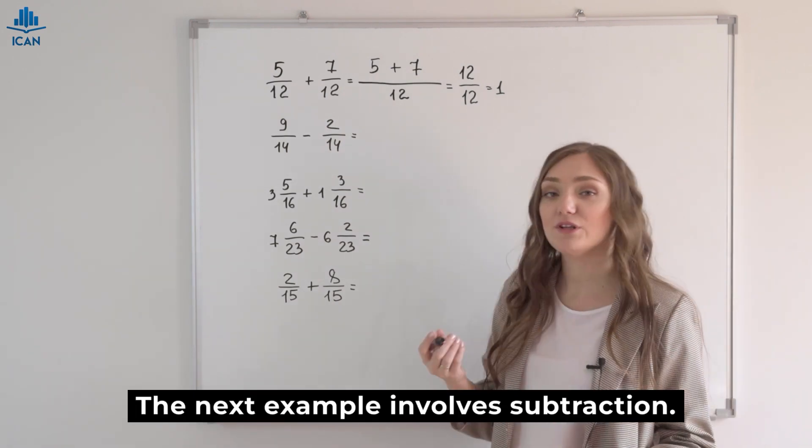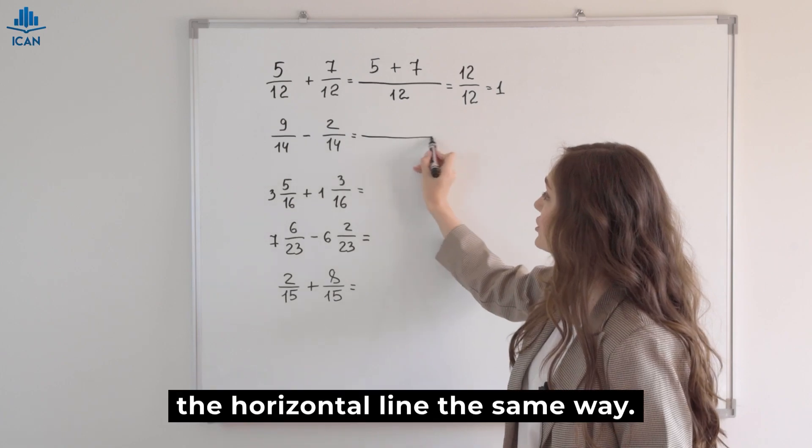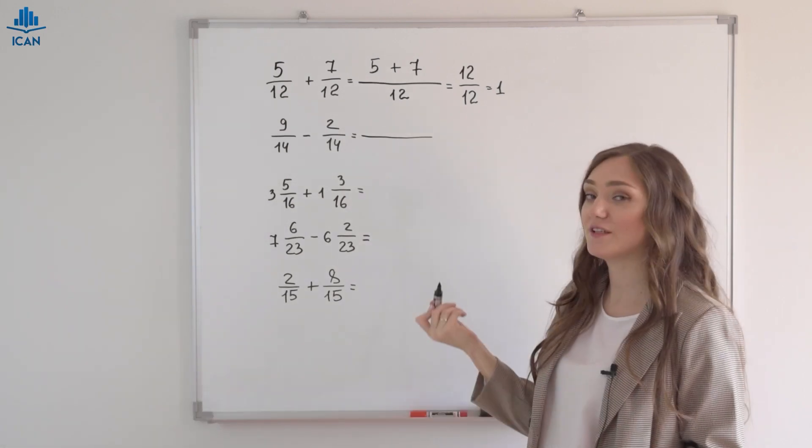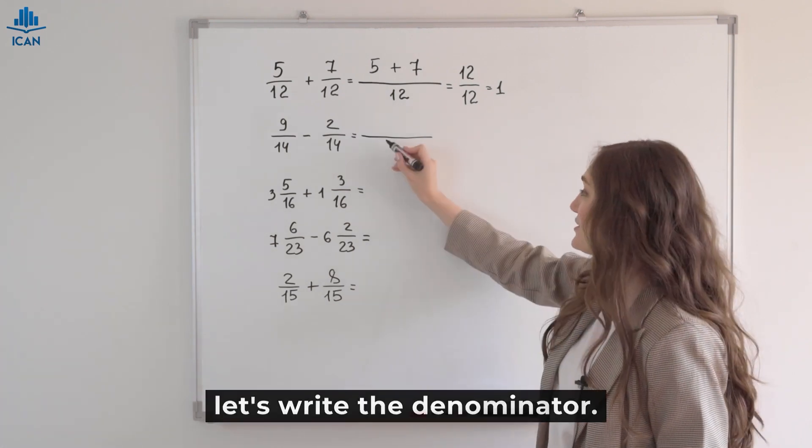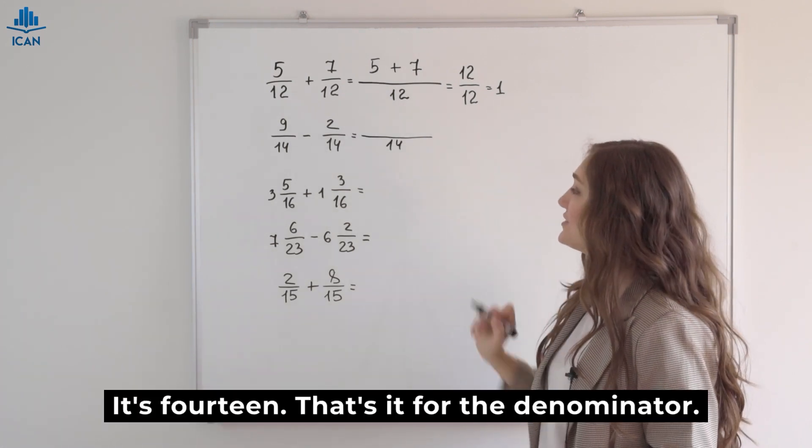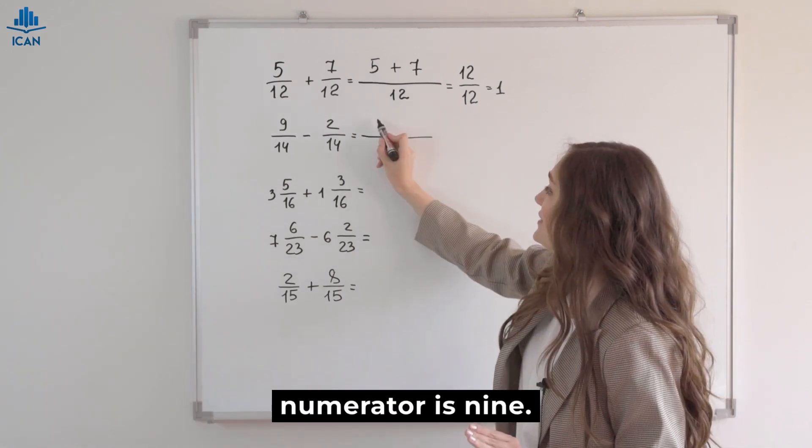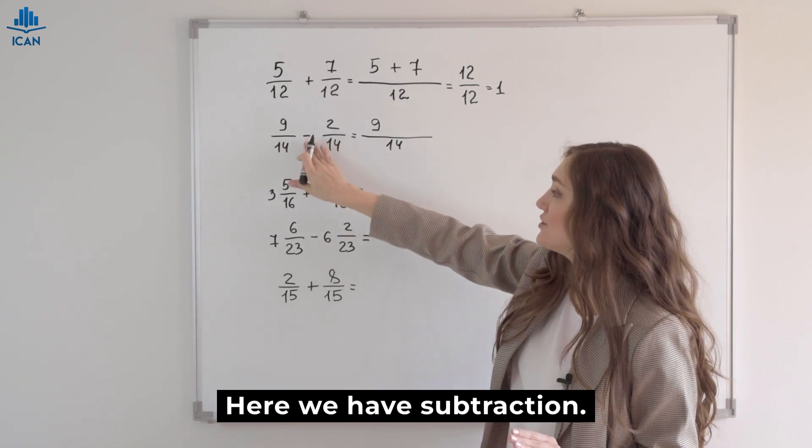The next example involves subtraction. Draw the horizontal line the same way. We have a simple fraction. What do we do first? First, let's write the denominator. It's 14. That's it for the denominator. Now, the numerator is 9.